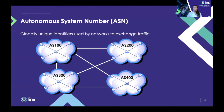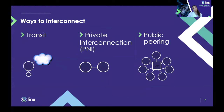If AS100 wants to talk to AS200, it needs to announce its AS number to the other network, and AS200 needs to accept the traffic that comes from AS100 in order for that traffic exchange to take place. So how do networks actually exchange traffic on the Internet? Well, there are a few different ways, but we're going to look at the three most common: transit, private interconnection, and public peering.